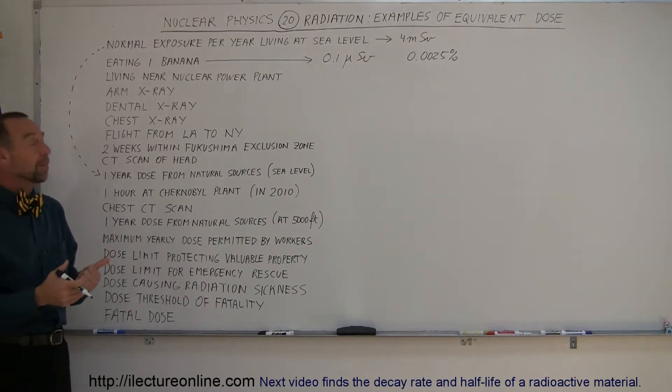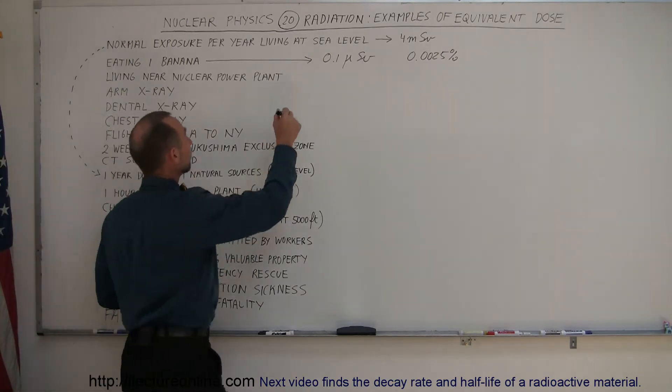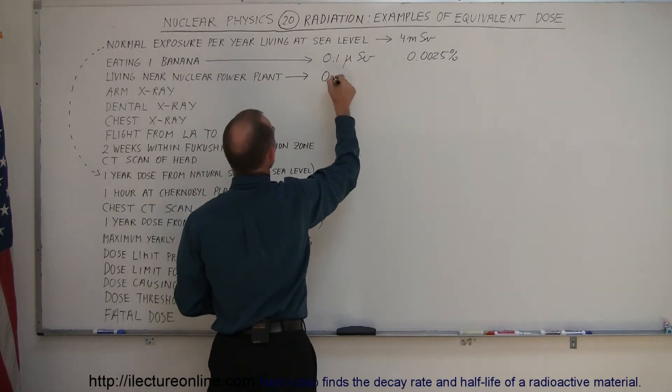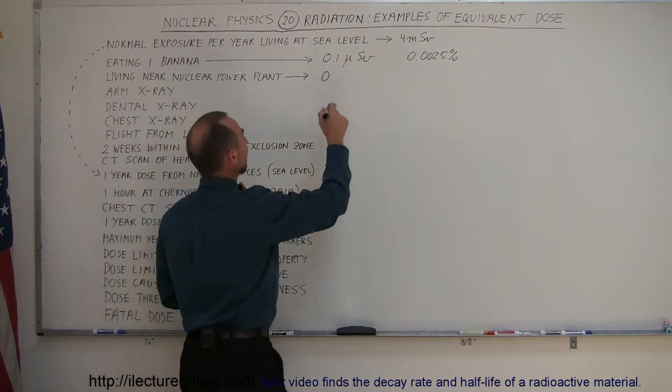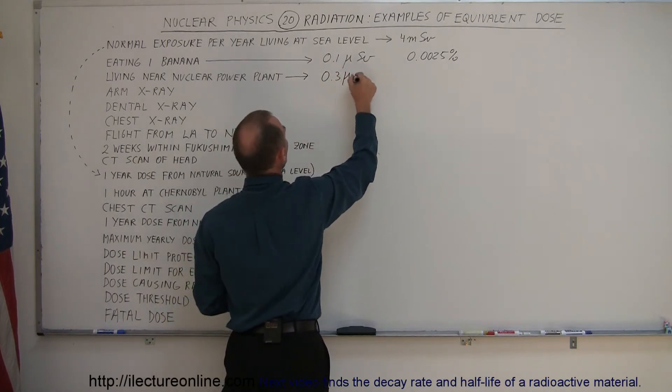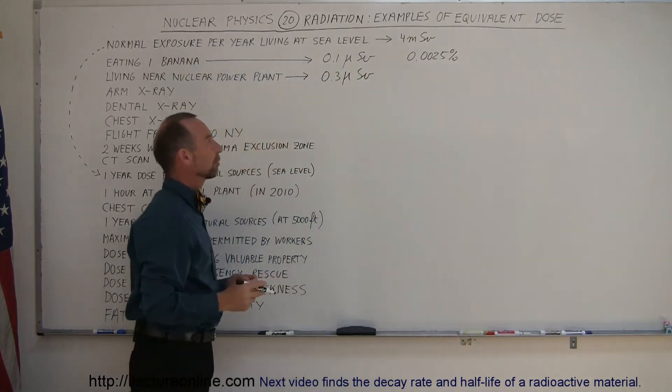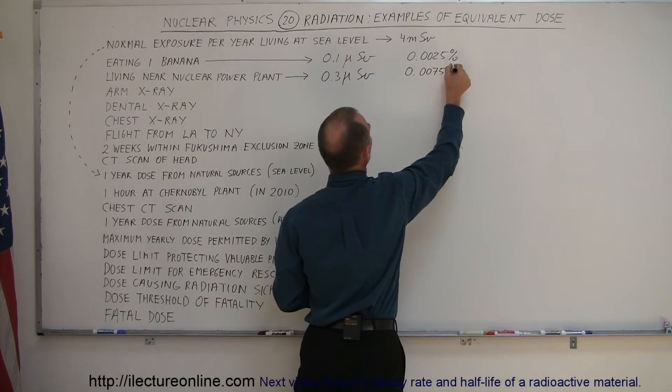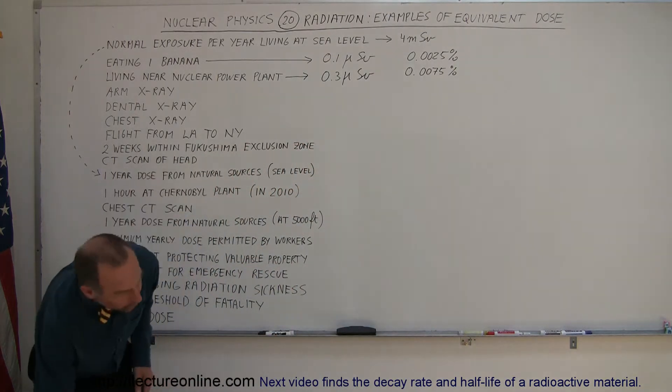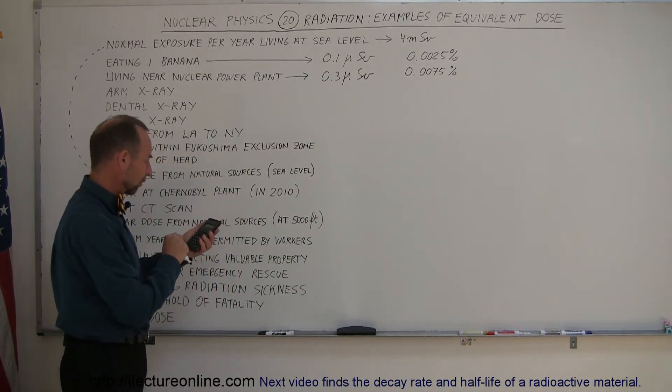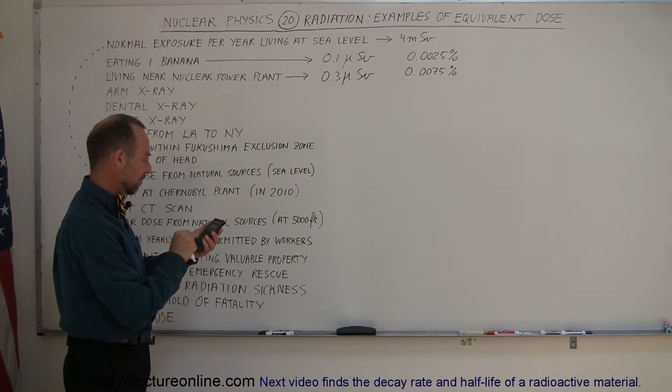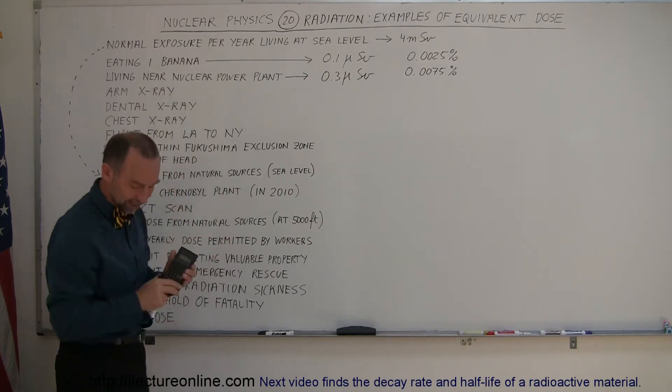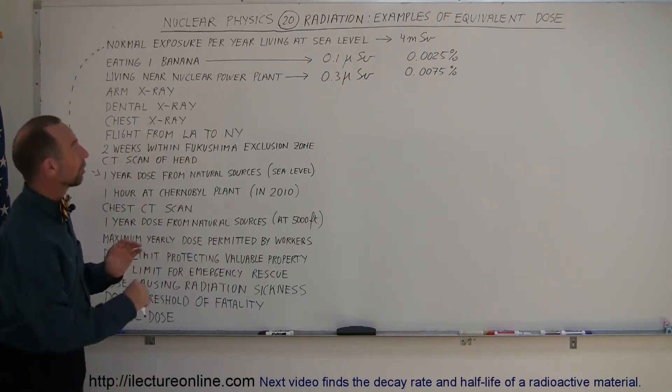What if you live near a nuclear power plant? A lot of people are very scared living close to a nuclear power plant, but it turns out they tend to be fairly safe. The typical radiation living within 50 miles of a nuclear power plant is about 0.3 microsieverts per year, which would be 0.0075%.